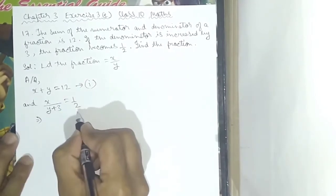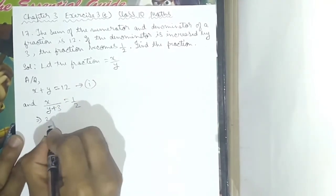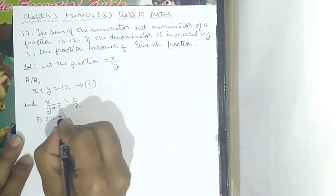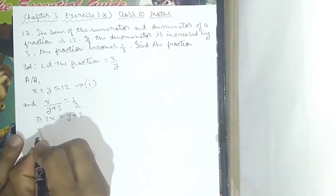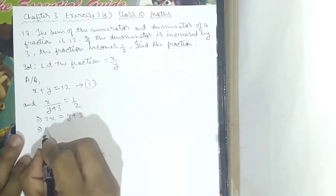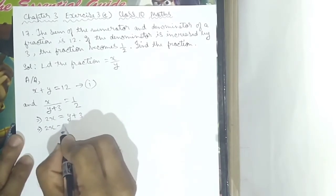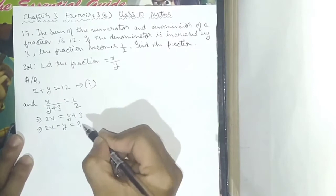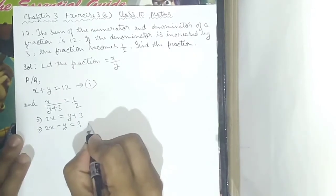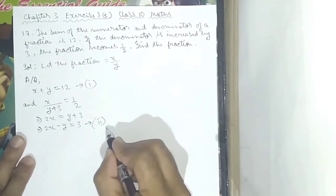Cross-multiplying: 2 into x gives 2x, and this is equal to y plus 3 into 1, which is y plus 3. This implies 2x minus y is equal to 3. This is equation 2.